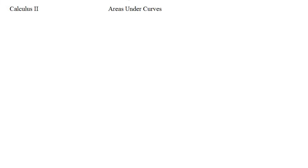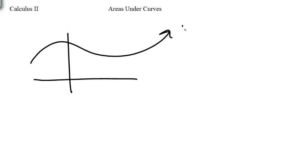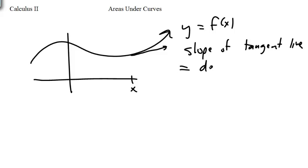Now, in Calculus 1, we would take a function y equals f of x, and we would take a particular point on the function at some x value. What is the slope of the tangent line at that particular point? And that was the derivative.